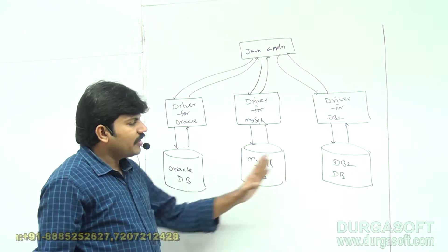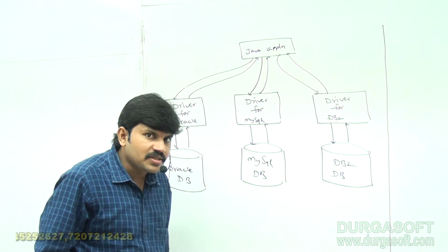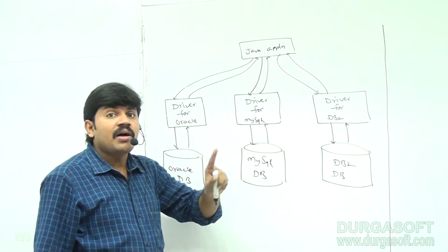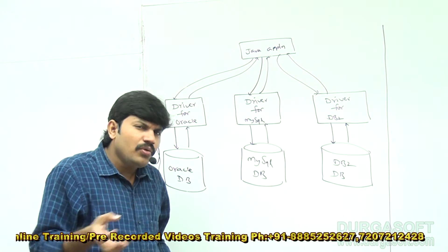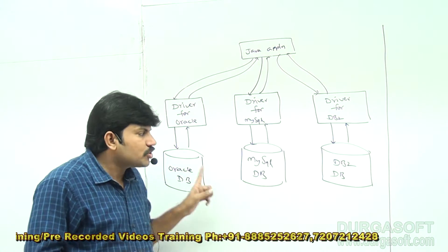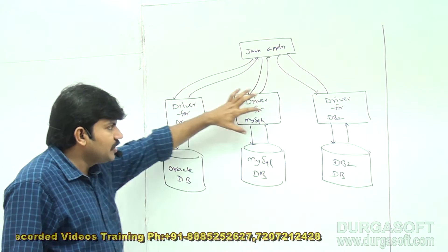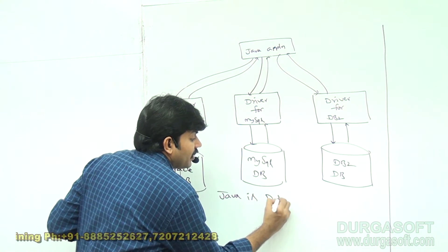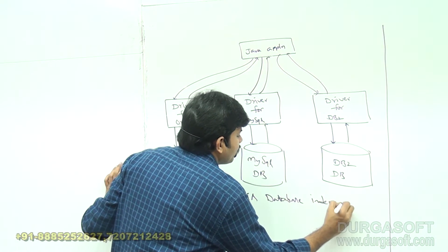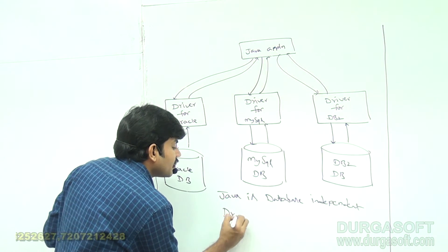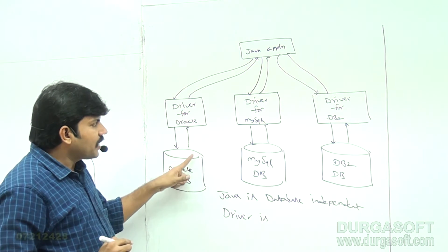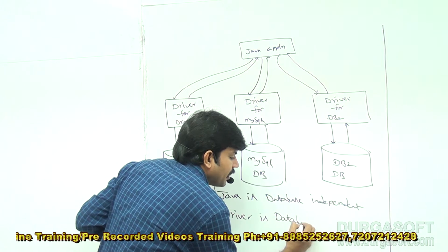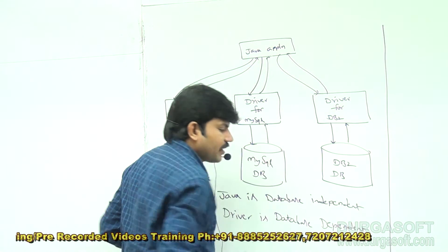Now, how many databases are there? Three databases. But how many Java applications are there? Only one application. The same application communicates with any number of databases. That's why Java is database-independent. But the corresponding driver is going to take care of converting Java into database-specific terminology. A separate driver for Oracle, a separate driver for MySQL, a separate driver for DB2 — driver is database-dependent.